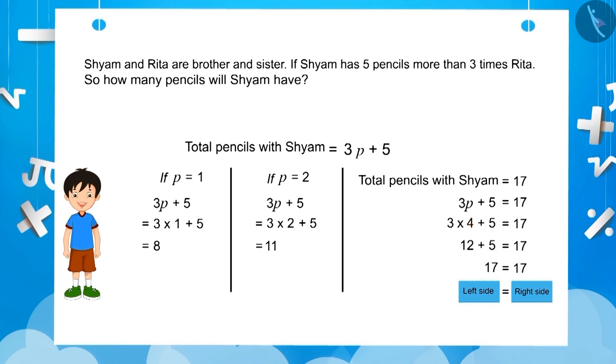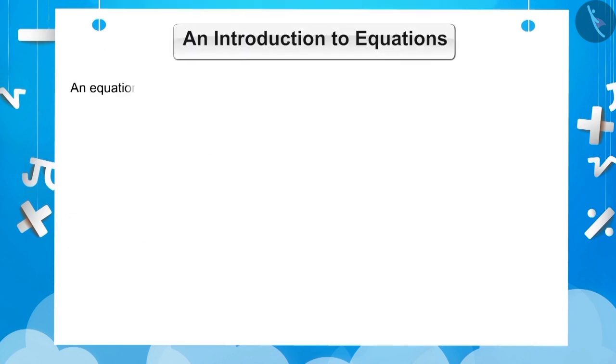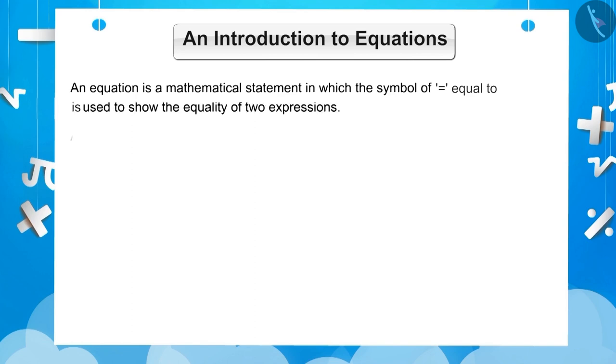Now, let's understand what an equation is. An equation is a mathematical statement in which the symbol of equal to is used to show equality of two expressions. An equation consists of one or more variables and numbers.